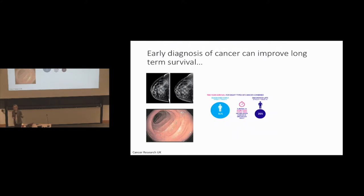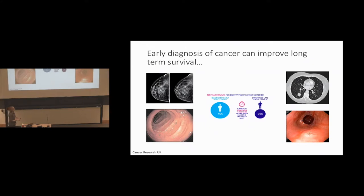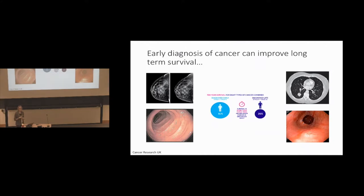We do have other imaging-based approaches where we are more selective. For example, with lung CT, we'll normally be picking out individuals at high risk of developing lung cancer. Also with esophageal imaging, the patients undergoing endoscopy to try and look for early signs of esophageal cancer at the junction with the stomach are normally those that have suffered from chronic acid reflux, or developed a further metaplastic condition, which I'll tell you more about later.